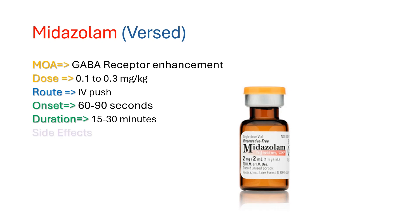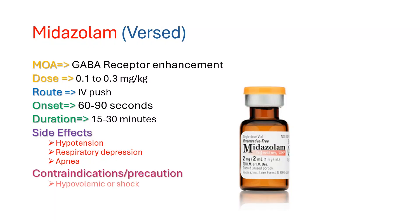Side effects include hypotension, respiratory depression, and apnea. Due to its tendency to cause hypotension, lower doses should be used in hypovolemic and elderly patients, or etomidate or ketamine should be used instead. Like all benzodiazepines, Versed does not provide analgesic effect and is generally not used alone in rapid sequence intubation, but it does have anti-seizure effects, making it an effective agent for RSI in patients with status epilepticus.